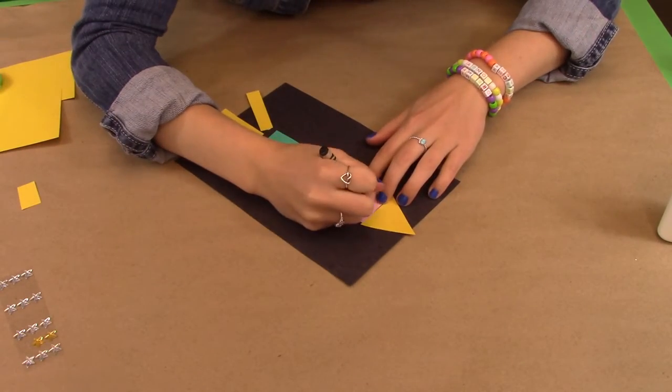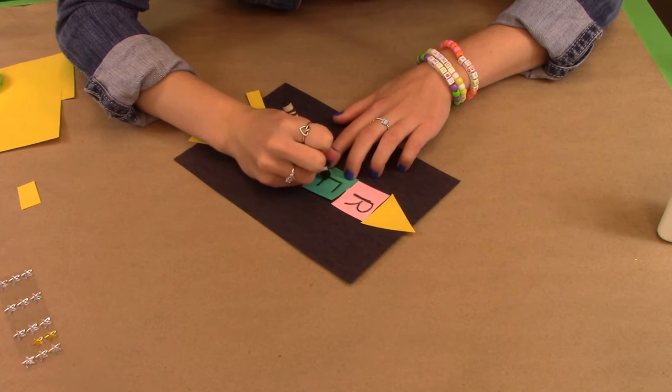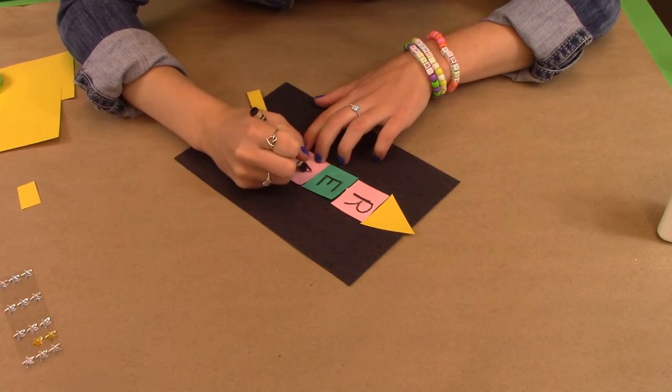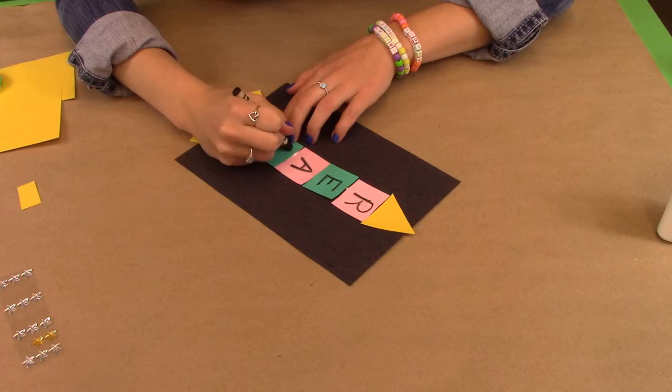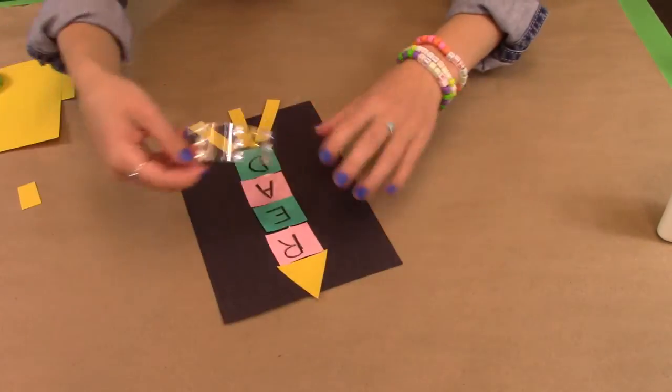Awesome! Now what you're going to want to do is write down your word in the squares. Each square should have one letter in it, just like I'm doing here. So I've written the word 'read'. You might want to do your name, just like that.